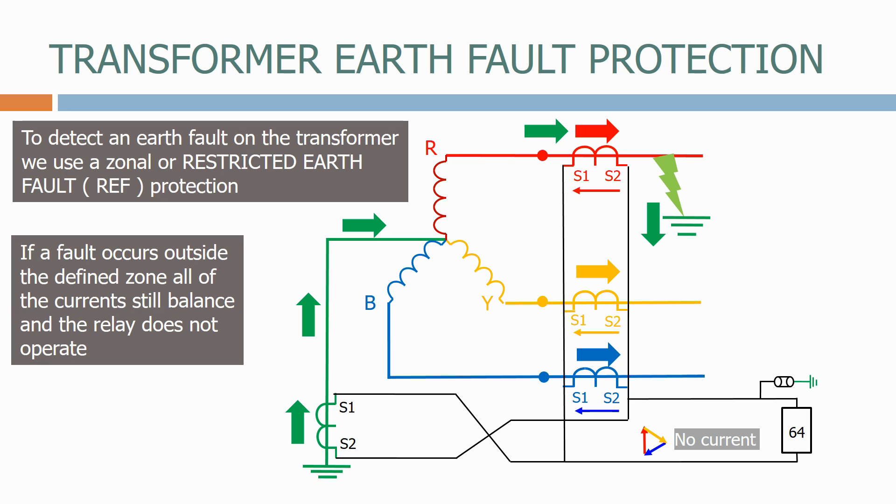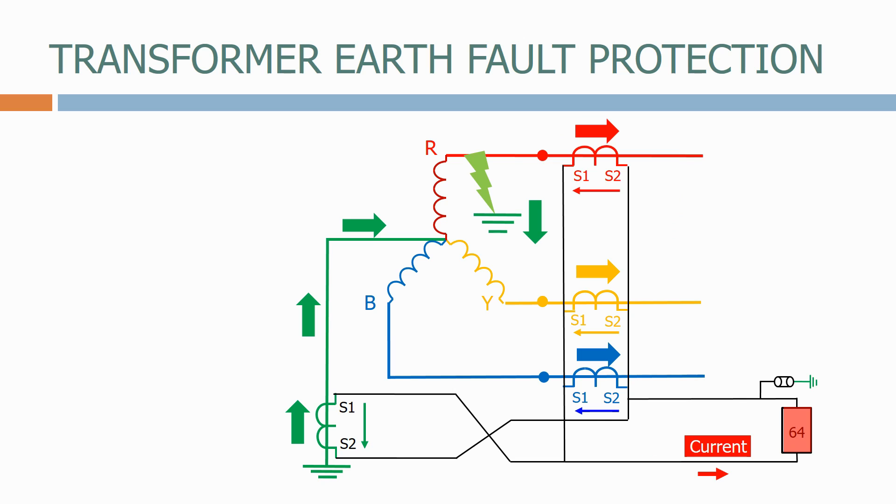Let's now remove the fault and apply a fault inside the zone on the transformer itself. This time there is no earth fault current generated on any of the phase CTs, but we do have current flowing through the CT on the ground connection. This imbalance will cause a spill current which is enough to operate the earth fault relay.